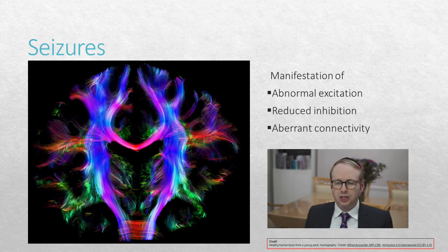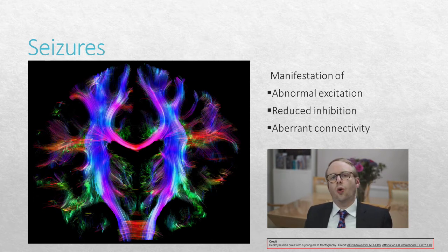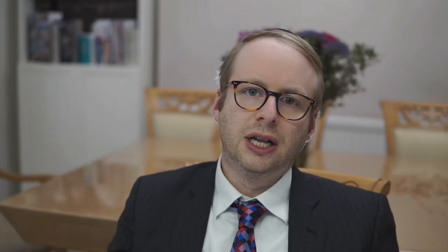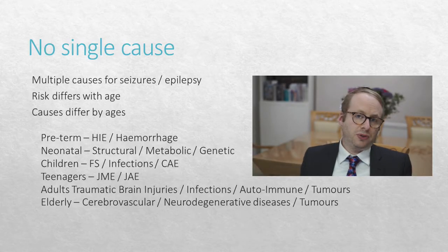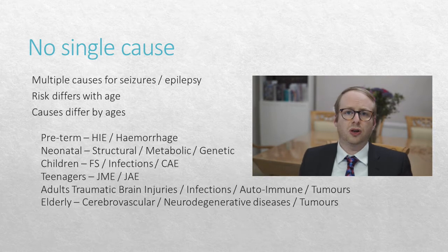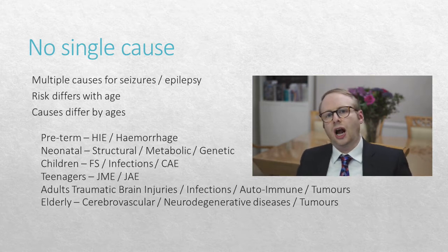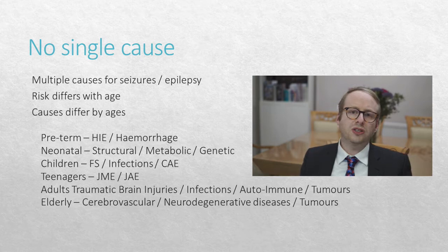We're thinking about epilepsy, we're thinking about seizures, and we know that these are manifestations of either abnormal excitation or reduced inhibition, or some problem with the connectivity within the complex structures of the brain. We know very well that there are multiple causes — there's no single cause to explain everyone's particular form of seizure or epilepsy. And the risk of having epilepsy or seizures actually differs with age. The risk is highest in the youngest age groups, lowest in the middle ages, and then creeps up again as we get older, and the reasons for this are reflective of the underlying causes.